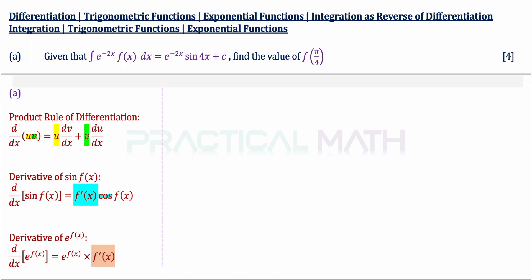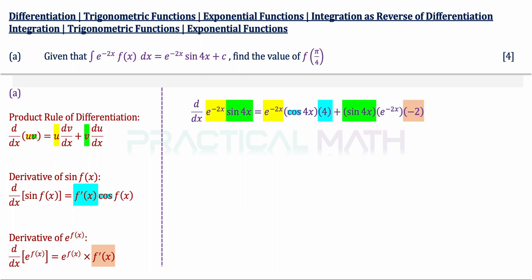With these three formulas in place, we can proceed to solve this question. In the first step of part A, we differentiate the right-hand side. Since differentiating a constant gives us zero, we can ignore that. So we differentiate e to the power of negative 2x multiplied by sin 4x, and for that we have to use the product rule.